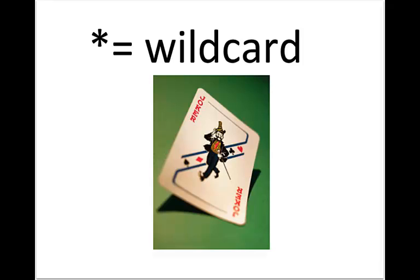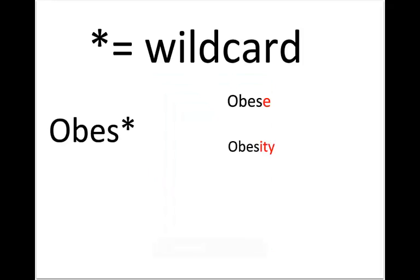You may have also noticed that I have added some stars or asterisks on some of my words — those are called wild cards. Wild cards can serve as any letter or a string of letters. In this example, I have attached one to the end of 'obese' so that the database will search for both 'obese' and 'obesity.'